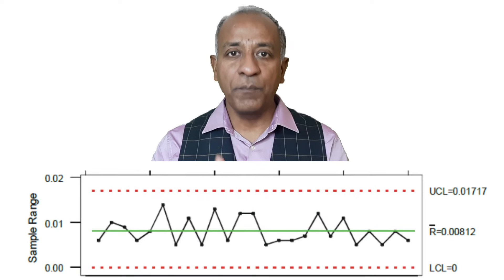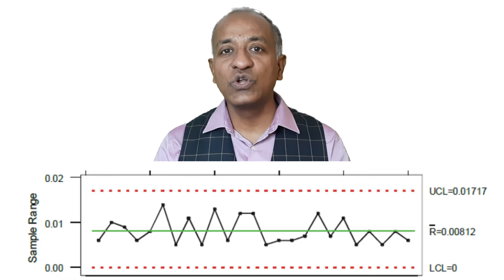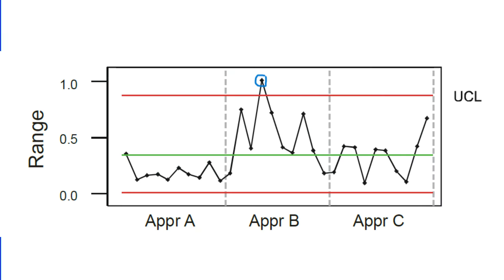In the range chart, the lower control limit is always zero. When we plot the upper control limit, it is very important that for all three appraisers, all points should be within the control limits. If even one point is outside the control limit, it means there is some error in the person doing that measurement. If all three appraisers have points outside the control limit, it indicates an issue with the measurement method or the measurement system itself — such as a vernier or micrometer.